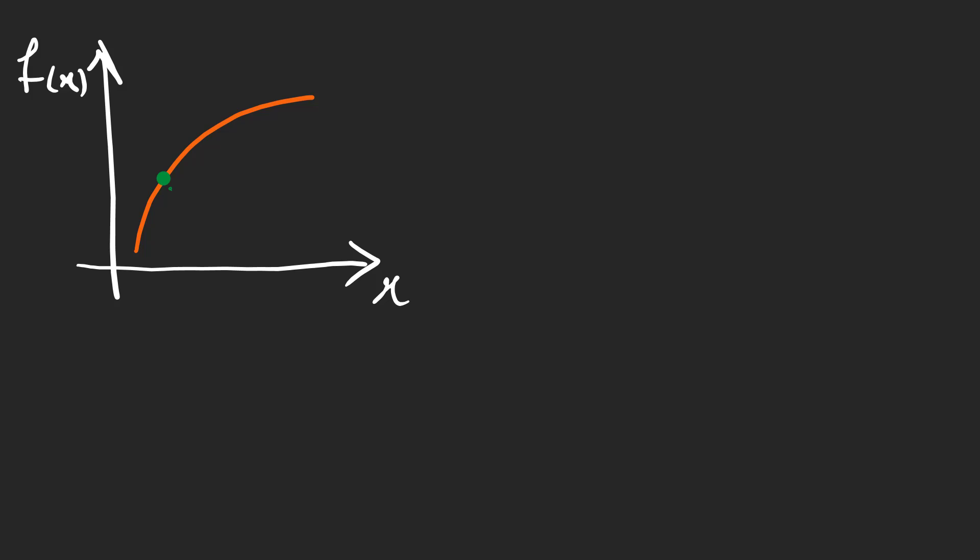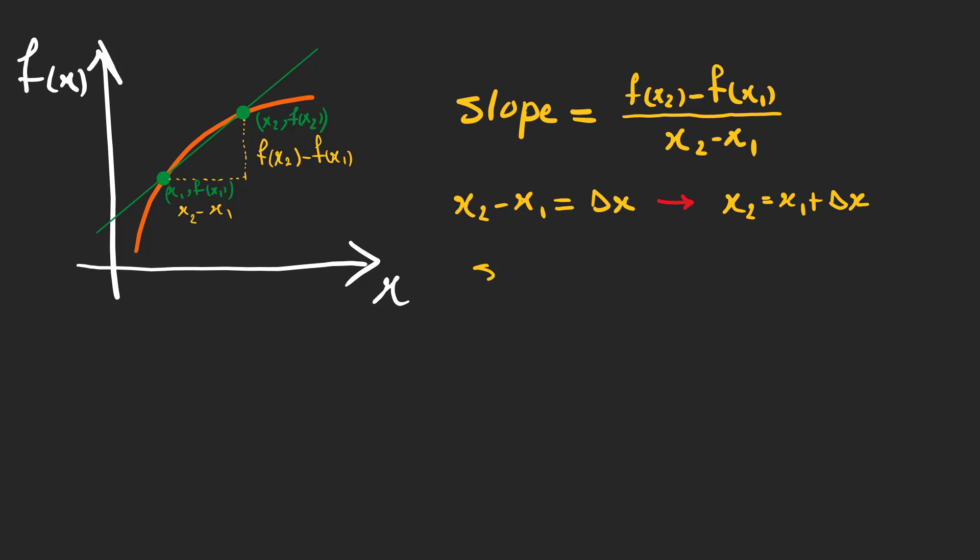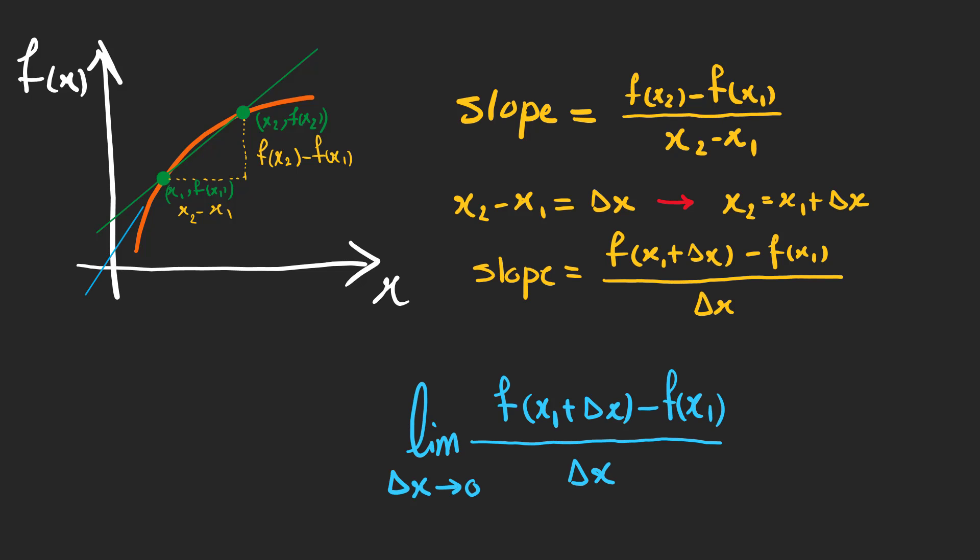Take this function as an example. Let's choose two points on this function and find a slope of the line that connects them. We can calculate it like this. It can be rewritten as this expression. And if we take the limit of this expression as delta x goes to zero, we have a tangential line at point x1, which is called the derivative of this function at point x1.